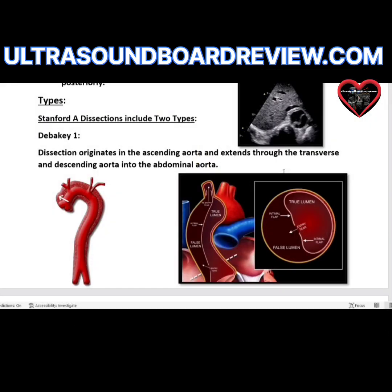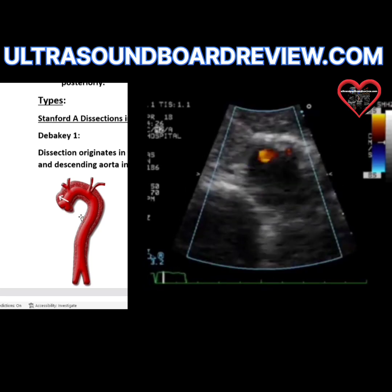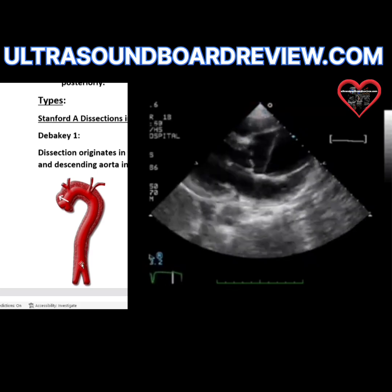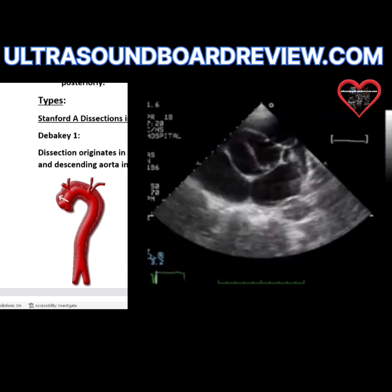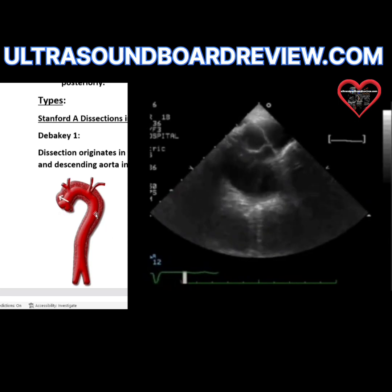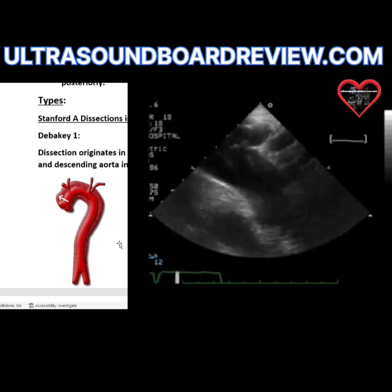There are two types of aortic dissections with three subtypes. You have a Stanford A dissection and a Stanford B. Stanford A has two subtypes: DeBakey 1 and DeBakey 2. DeBakey 1 will dissect the entire aorta — ascending, transverse, descending, and into the abdominal aorta, and possibly beyond.